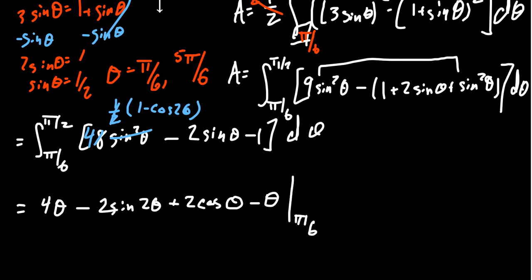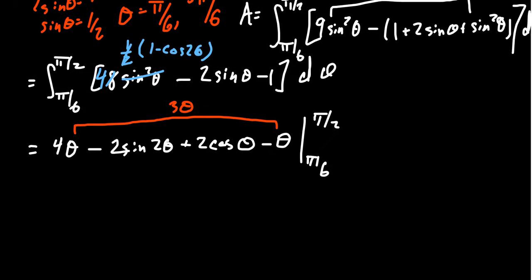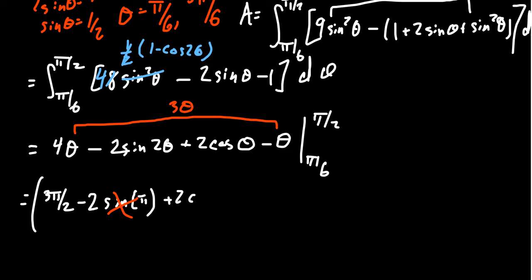Evaluating from pi over 6 to pi over 2 — we can combine 4 theta and negative theta into 3 theta. Plugging in pi over 2: 3 times pi over 2 gives 3 pi over 2. Plugging into the sine term: negative 2 times sine of pi — sine of pi is zero, so that disappears. We also have plus 2 times cosine of pi over 2, which is also zero. This is the convenience of using the pi over 2 bound with the symmetry argument.